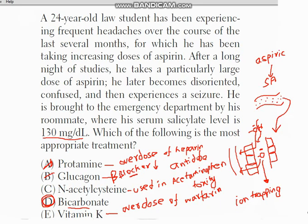To summarize: protamine is the antidote for heparin overdose; glucagon is the antidote for beta blocker toxicity; N-acetylcysteine is the antidote for acetaminophen toxicity; and bicarbonate is used whenever there is a high acidic molecule in the blood — such as in aspirin overdose — to eliminate the acidic particle. Vitamin K is used in the overdose of warfarin.